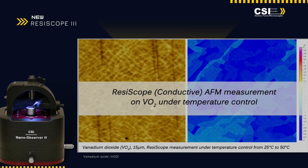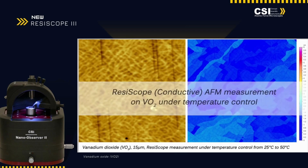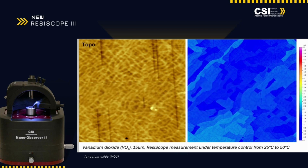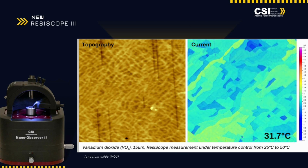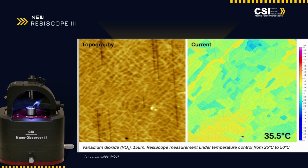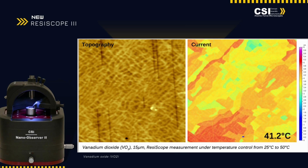Highlighting our easy temperature module, we demonstrate a temperature-dependent study on a vanadium dioxide sample, observing changes from 25 to 50 Celsius degrees. This module allows precise control and real-time monitoring of temperature effects on material properties.